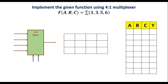In this video, I will consider one example to implement a Boolean function using a multiplexer. Implement the given function using a 4-to-1 multiplexer. The given function is f(a, b, c) = Σ(1, 3, 5, 6). These are the minterms and this is the given function which is in SOP form.